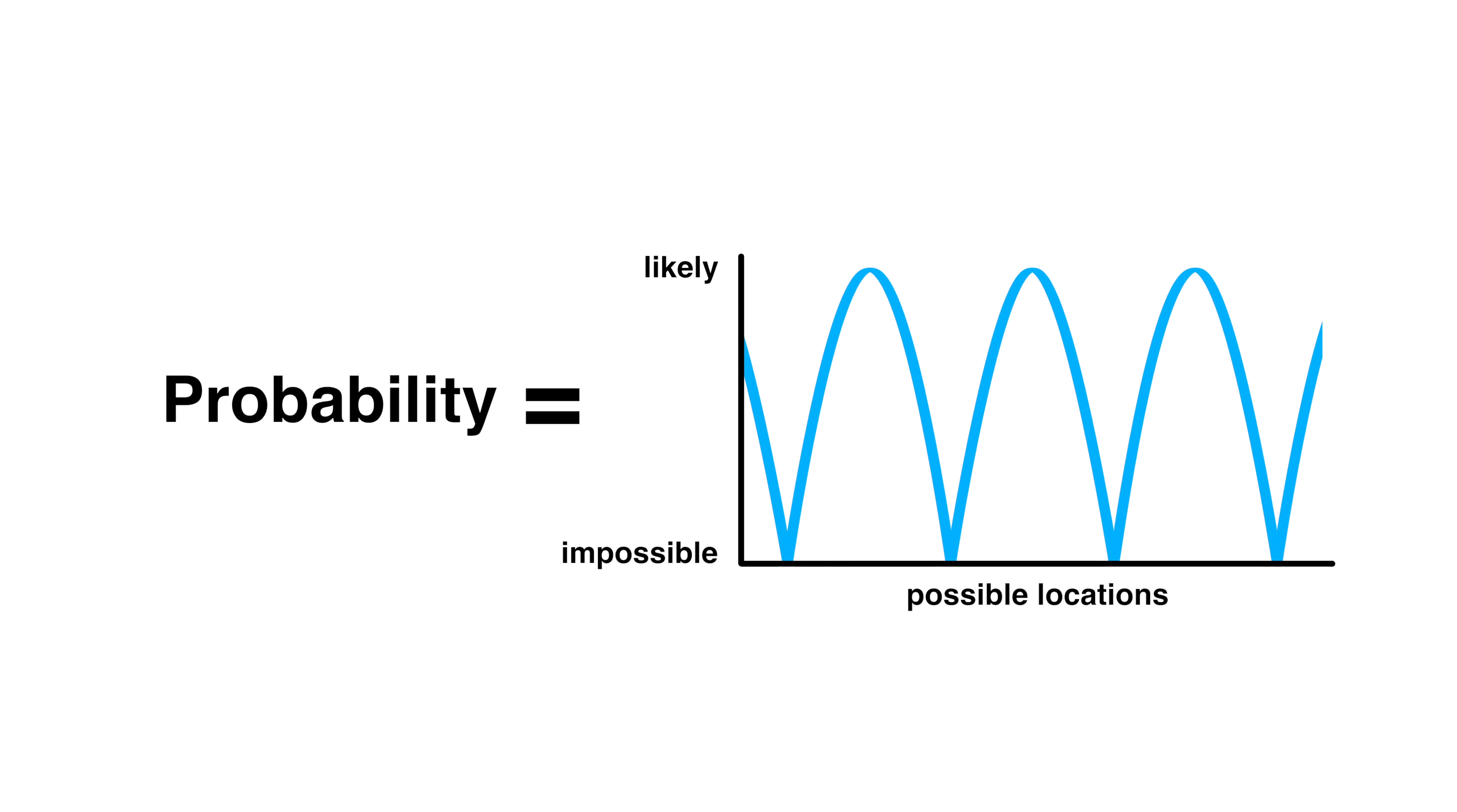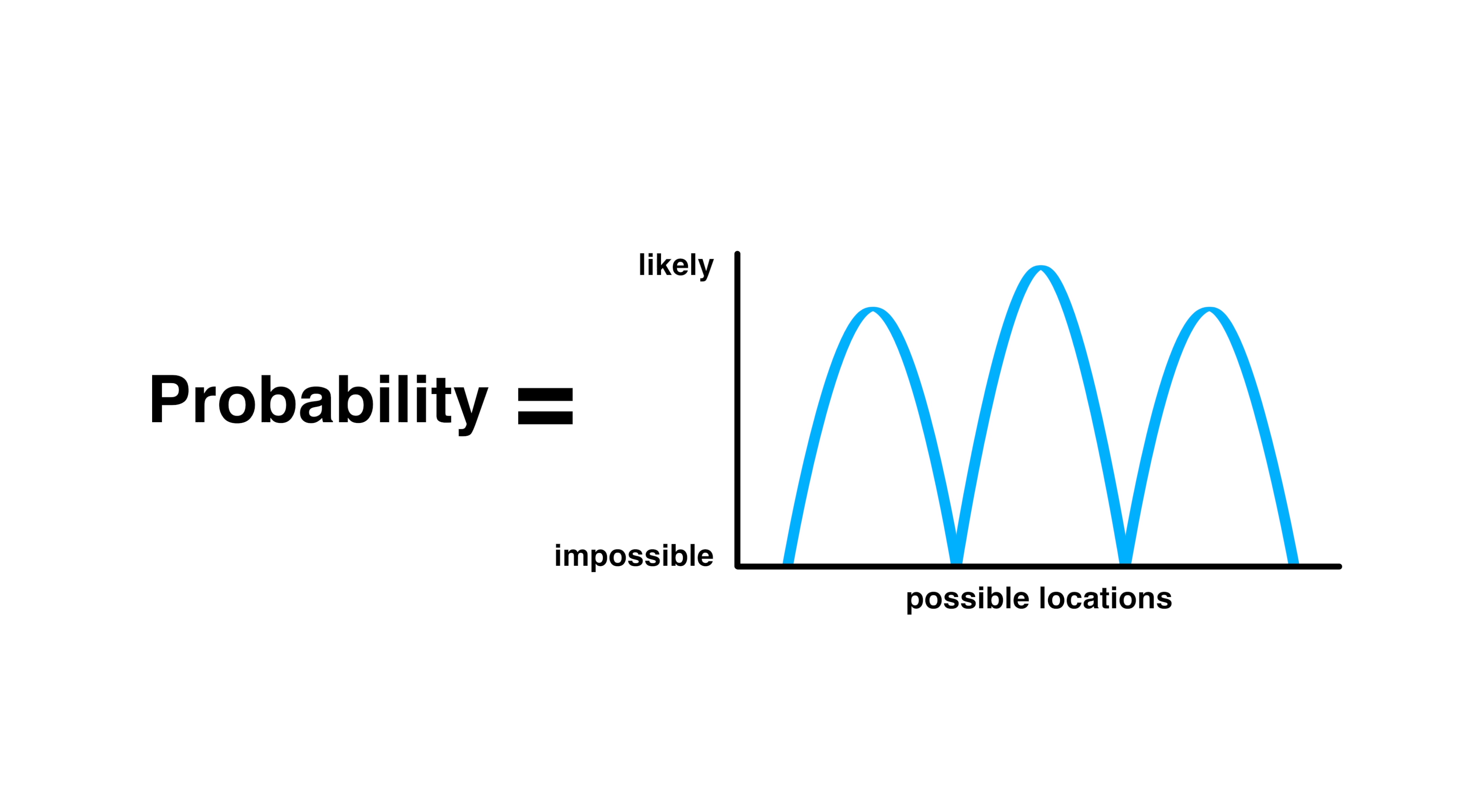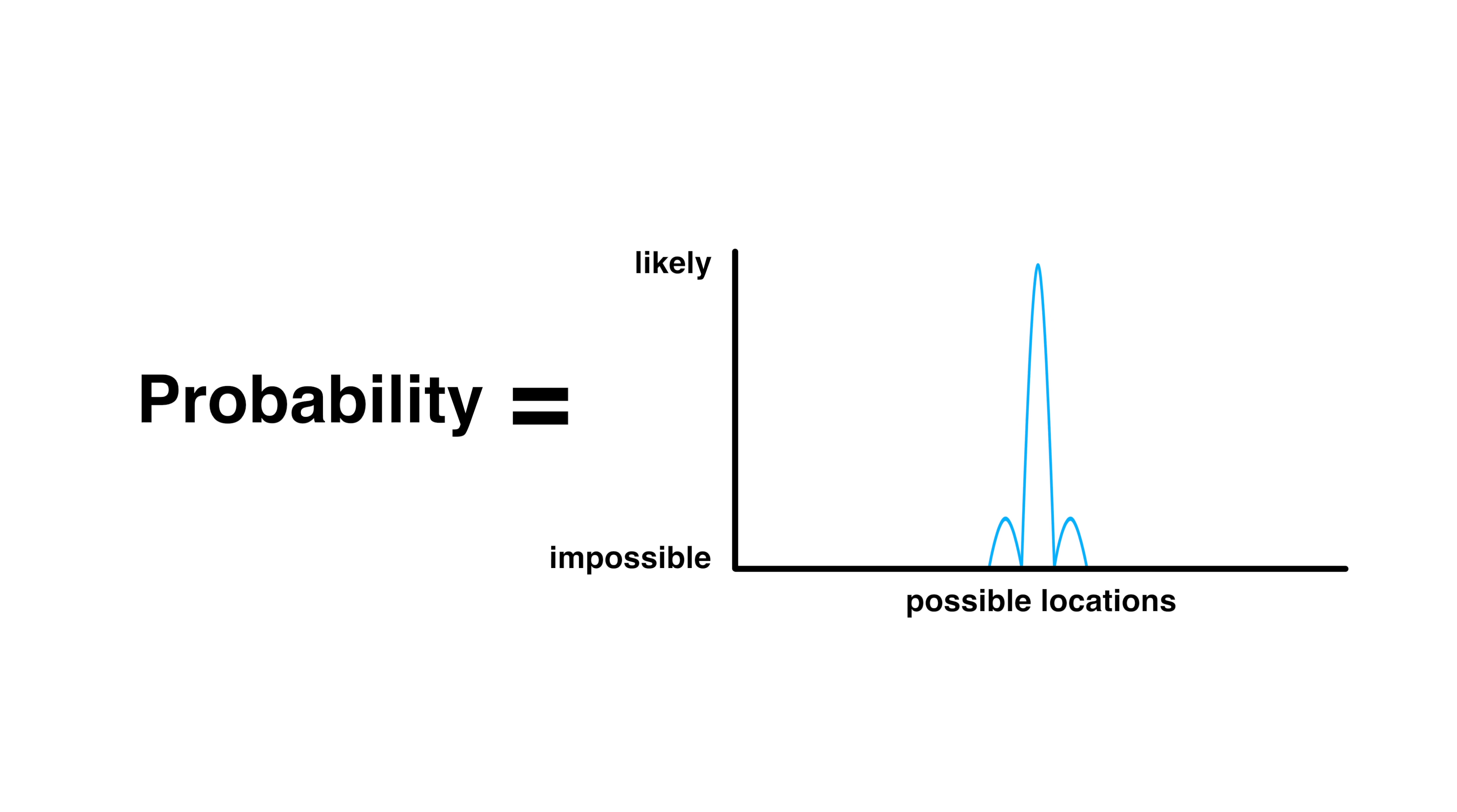Now, when we detect the particle, say the electron or photon, we don't find it everywhere. We find it in one location. At the moment of detection, the location of the particle is determined.